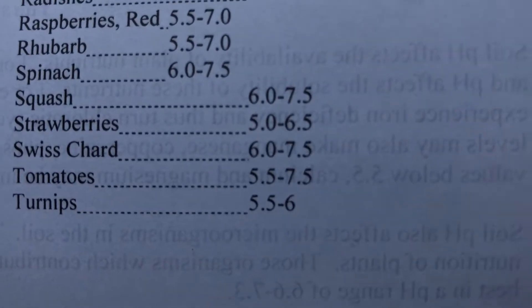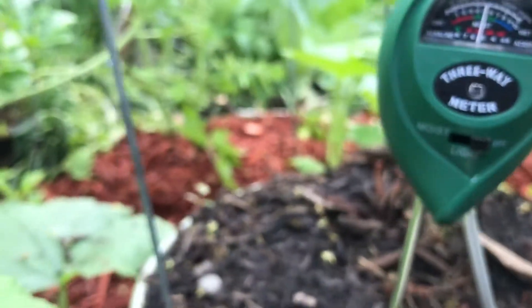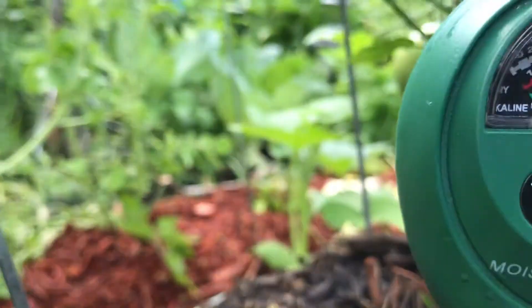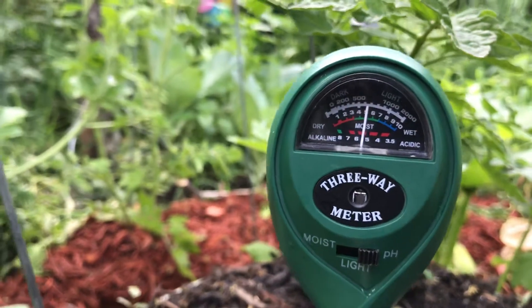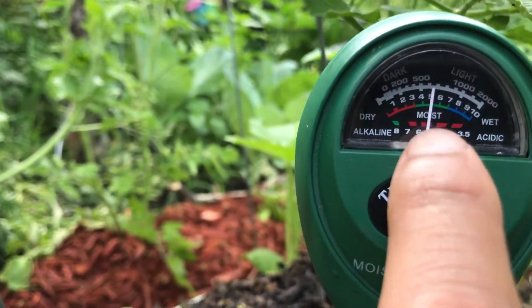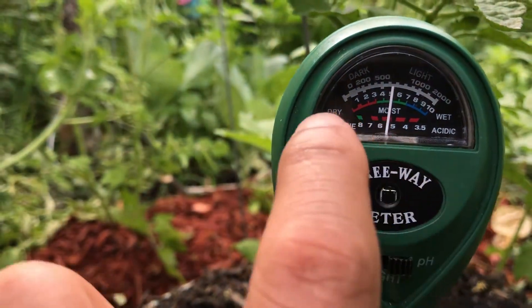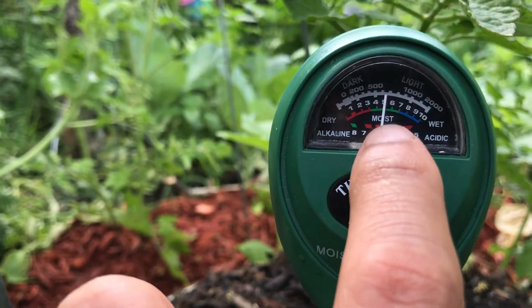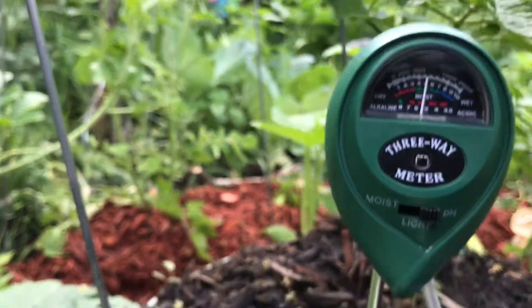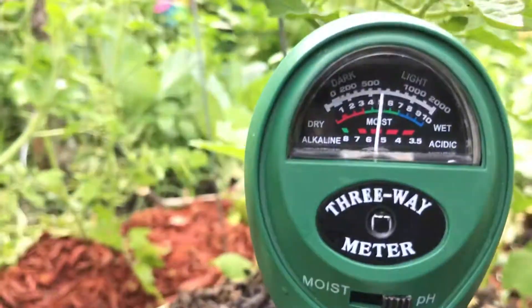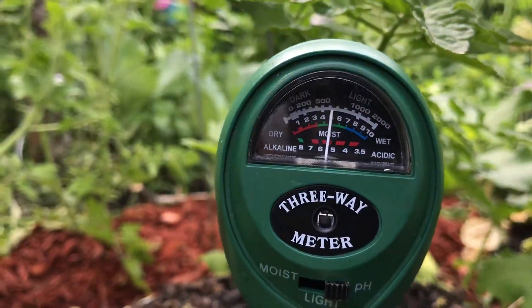Tomato is 5.5 to 7.5. Now it's 5.5. Looking at the bottom one on the chart — 5.5 to 7.5. That's good. It's good for your tomato.